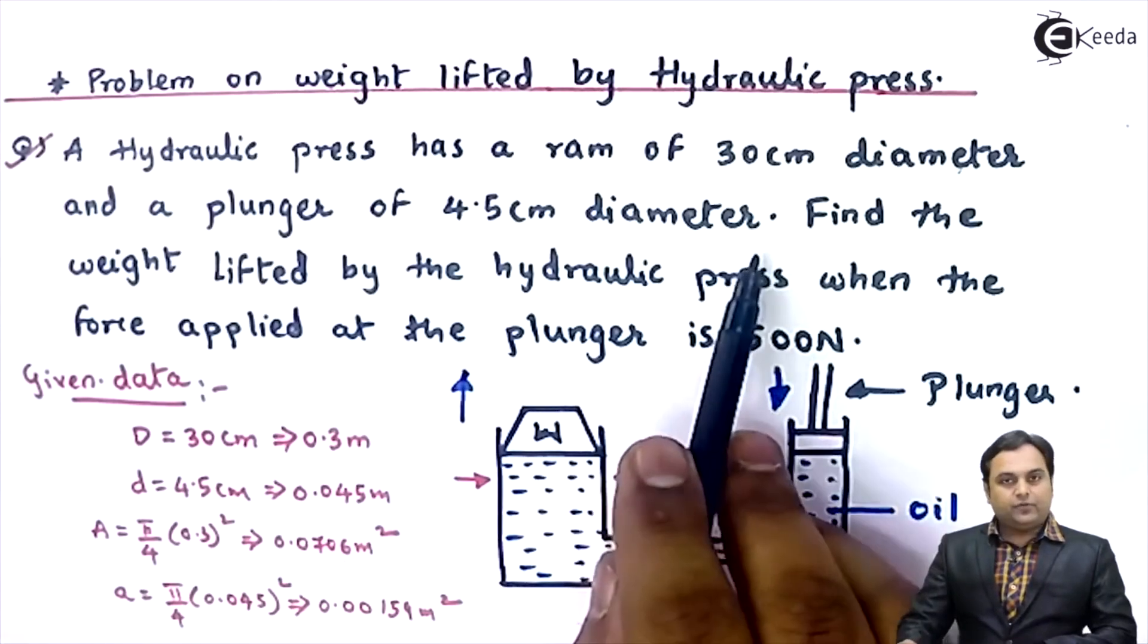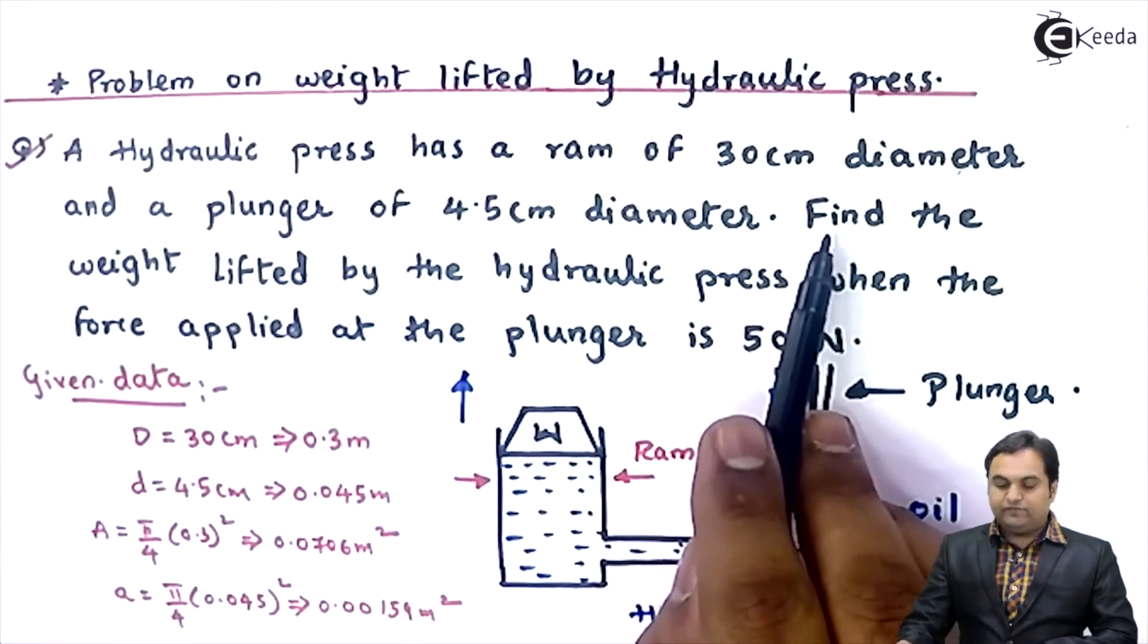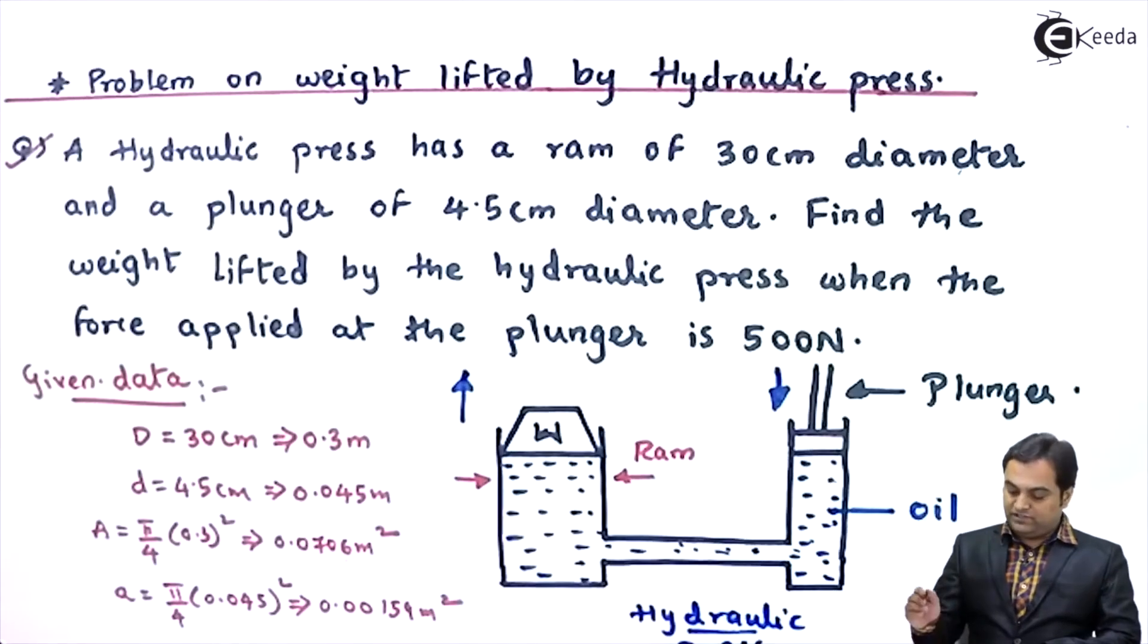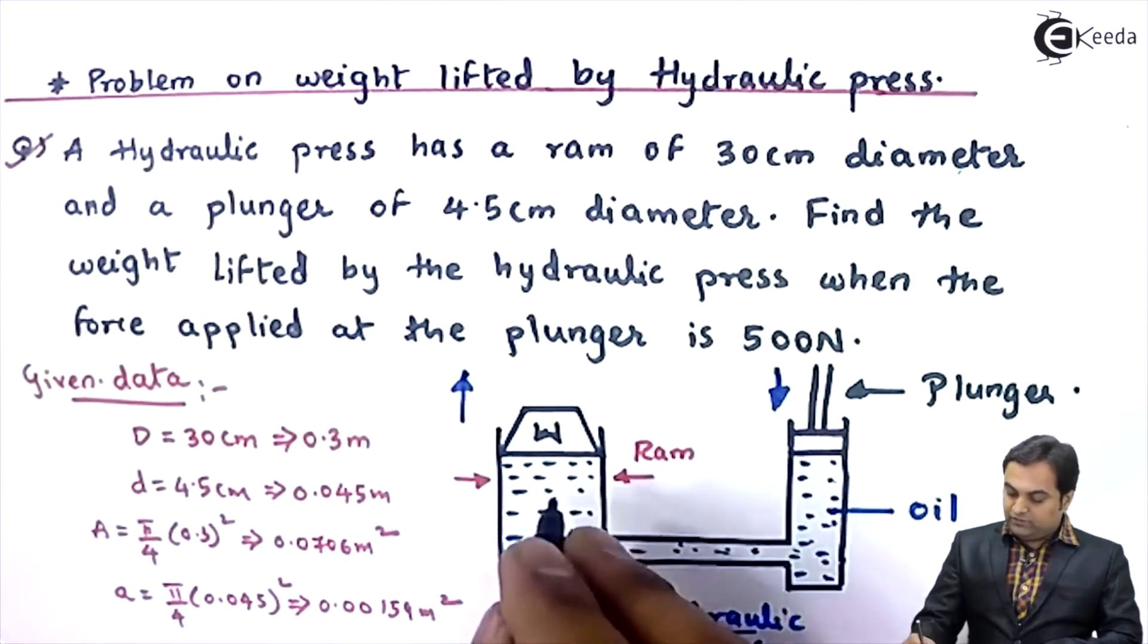So now I'll read the question once again. What we have to find here: find the weight lifted. Here we have to calculate how much is the value of this W, so W is the unknown for us.